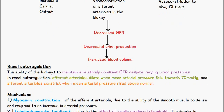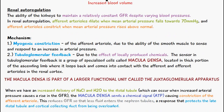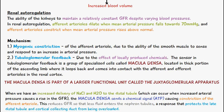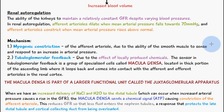Now let's talk about the intrinsic mechanism — renal autoregulation. This is the ability of the kidneys to maintain a relatively constant glomerular filtration rate despite varying blood pressures. Renal autoregulation is a type of intrinsic mechanism — it's the way the kidneys can regulate themselves. The afferent arterioles dilate when the mean arterial pressure falls below 70 mmHg, and constrict when the mean arterial pressure rises above normal.